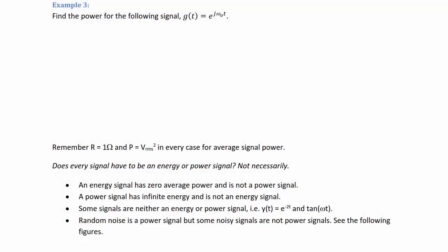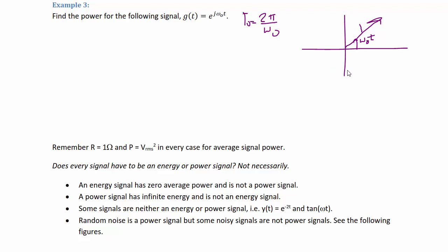Example 3: Find the power for the signal g(t) = e^(jω₀t). This is a complex exponential, so T₀ = 2π/ω₀. We can sketch a complex exponential as a vector with magnitude 1 that rotates at ω₀t — counterclockwise if ω₀ is positive, clockwise if ω₀ is negative. The real part is cos(ω₀t) and the imaginary part is j·sin(ω₀t). We can immediately see this is going to be a power signal and not an energy signal because the energy is infinite.